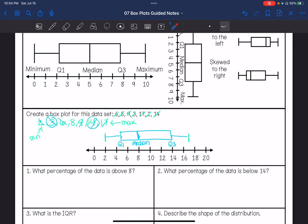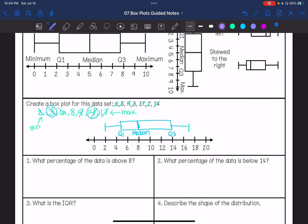So now I'm going to answer questions involving this data. What percentage of the data is above 8? So if 8 is my median, that means 50% of the data is above 8. What percentage of the data is below 14? Let me label. This is 25%, 25%, 25%, 25%. So below 14, there's 75% of it is below 14, because that is 25 plus 25 plus 25.